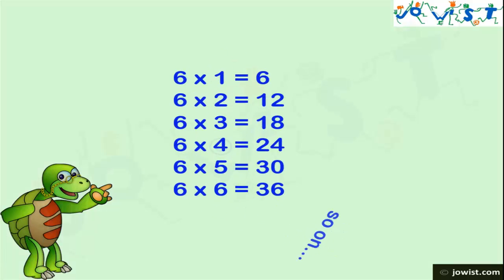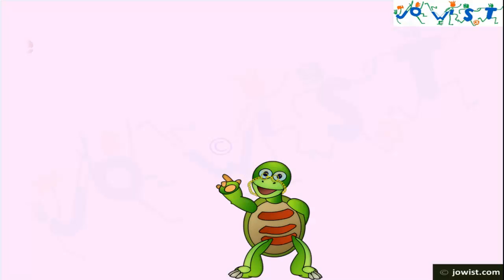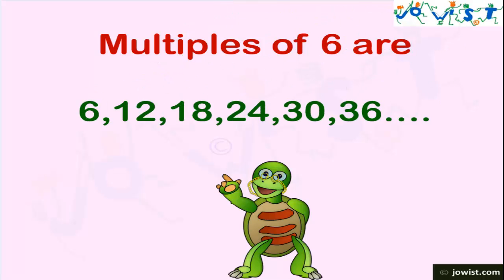For example, 6 multiplied by 1 is 6, 6 multiplied by 2 is 12, 6 multiplied by 3 is 18, 6 multiplied by 4 is 24, 6 multiplied by 5 is 30, 6 multiplied by 6 is 36, and so on. Therefore, the multiples of 6 are 6, 12, 18, 24, 30, 36 and so on.